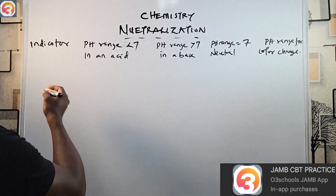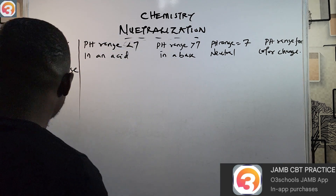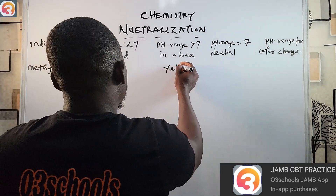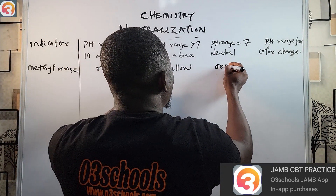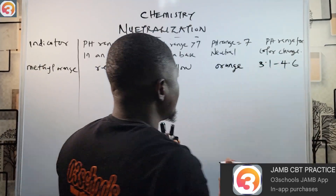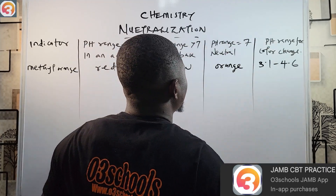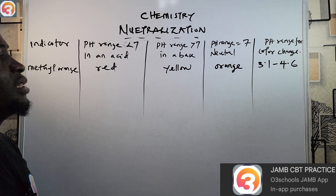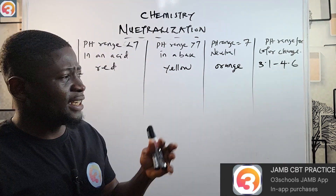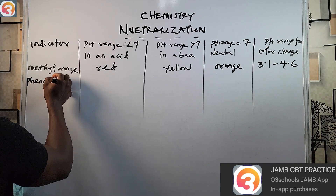The first indicator is methyl orange. In an acidic medium it is red; in a base it is yellow; in a neutral solution it gives an orange color. The pH range for color change is from 3.1 to 4.6. If you carry out a titration and the pH range falls between these values, the most suitable indicator to use is methyl orange.